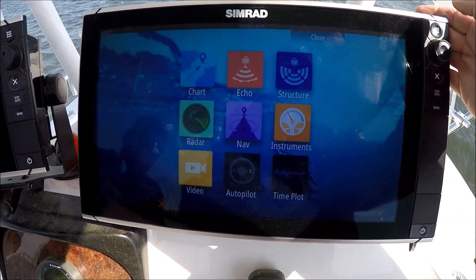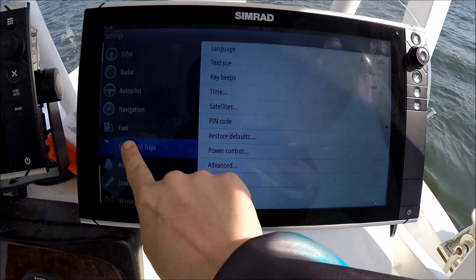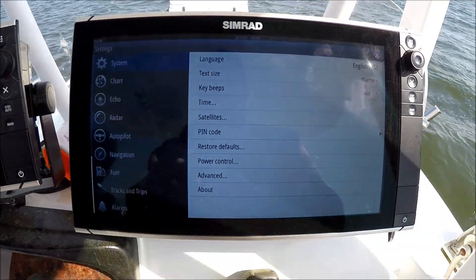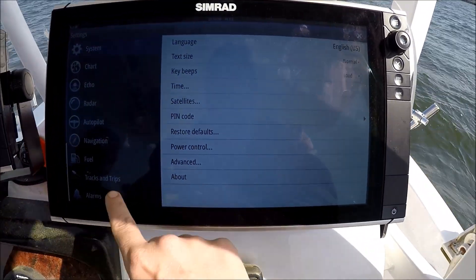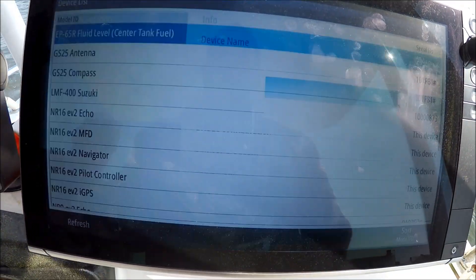You can hit our Pages button, Settings, we're on our System page here, and we want to go down to Network. It shows all our goodies here. Device list, I'm going to hit that.